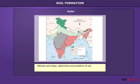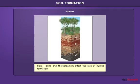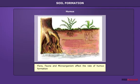For example, red and black soils in the Deccan Plateau are residual soils, whereas the alluvial soils of the Ganga Valley are transported soils. Humus: Flora, fauna, and microorganisms in soil affect humus formation and give it a black or gray color.